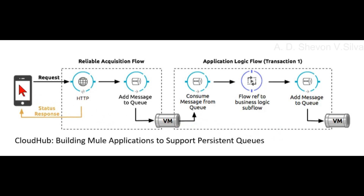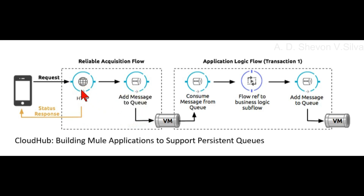Here you can see the diagram: a request client is connected via HTTP. In the reliable acquisition flow, the HTTP connector is connected to the add-message-to-queue component, which is also connected back to the client as a status response.